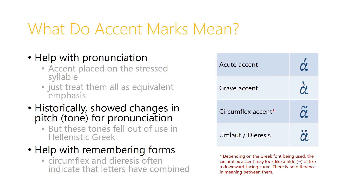What do the accent marks mean? Well, they can help with pronunciation. If you're looking at a New Testament text, the accent is placed on the stressed syllable, so that can show you where the stress should be when you're pronouncing the word — where the emphasis should be. You can just treat all four accents as equivalent, showing emphasis. Historically, these accents showed changes in pitch or tone for pronunciation, but these different tones fell out of use in Hellenistic Greek, so they don't really apply to the period of Greek that we're studying. They can occasionally help with remembering forms, and the circumflex accent and diorasis often indicate that two letters have combined. But for our purposes in Paideia, we'll ignore them most of the time.